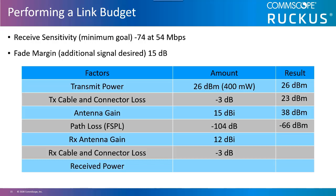The receive antenna has a gain of 12 dBi, taking us to negative 54 dBm. Once our received signal traverses the receive side cables and connectors, we lose another 3 dB, for a received signal strength level of negative 57 dBm, which is a very usable signal strength, given that location tracking would work at negative 62. Now these power levels may or may not be legal within a given regulatory domain — this is just an example of how to calculate the budget.